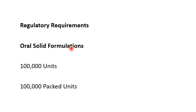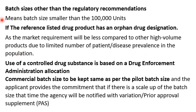The regulatory requirement for oral solid formulations is 1 lakh units, and some guidelines specify 1 lakh packed units are required. So batch sizes are generally made above 1 lakh — for example, 1.2 lakhs, 1.5 lakhs, and so on. However, if a manufacturer wants to manufacture a batch smaller than 1 lakh units, it can still be filed with justifications, as given in certain USFDA guidelines.